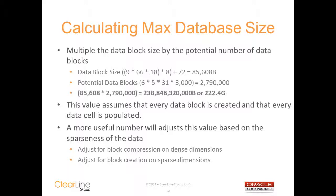This is about as far as the DBA guide or the database statistics can take you. In reality, your cube will be only a small fraction of this number, so you'll need to adjust the size of your cube based on the sparseness of the data. You'll need to make some assumptions on the average number of cells being compressed out on the dense dimensions and about block creation on the sparse dimensions.